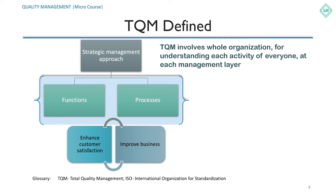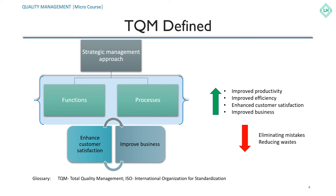Oakland in 2003 defined TQM as an approach involving the whole organization for understanding each activity of each individual at each management layer. TQM is a strategic management approach that aims to improve business as a whole and add value to the customers. TQM tools help in identifying and eliminating mistakes, reducing waste, and improving productivity, which eventually helps in continuous improvement of organizational processes and products, further enhancing efficiency of resources.